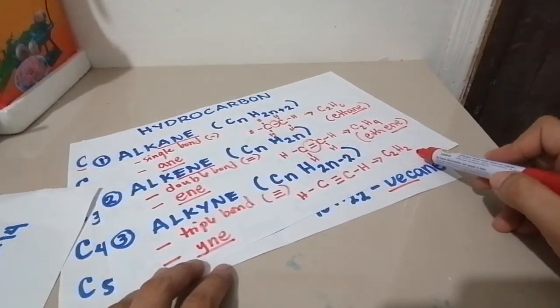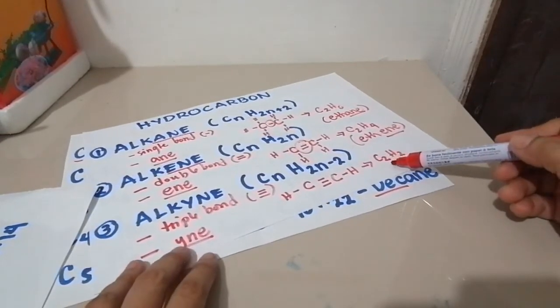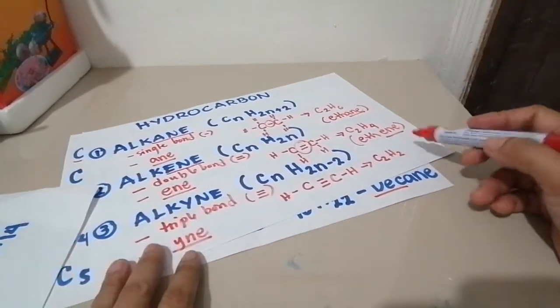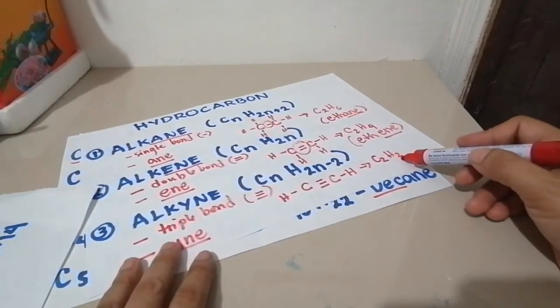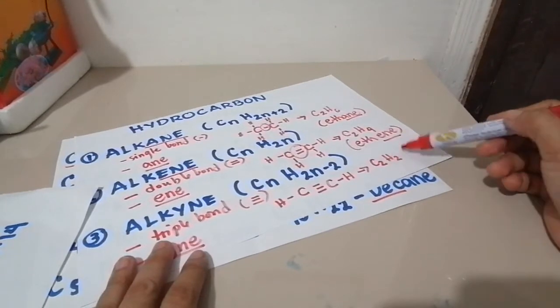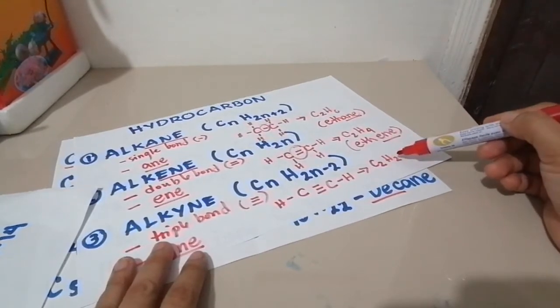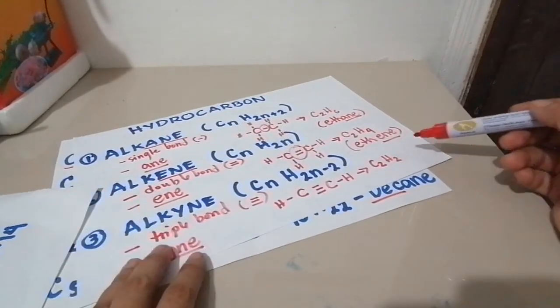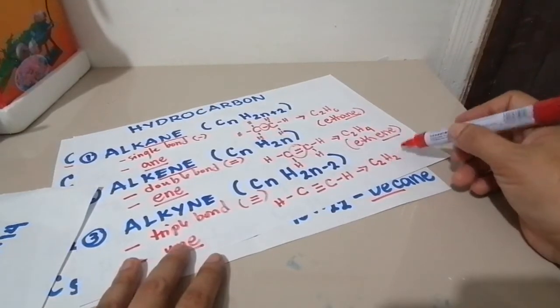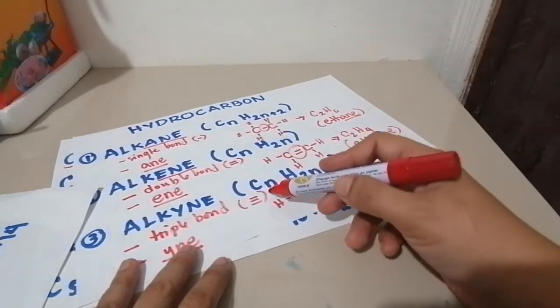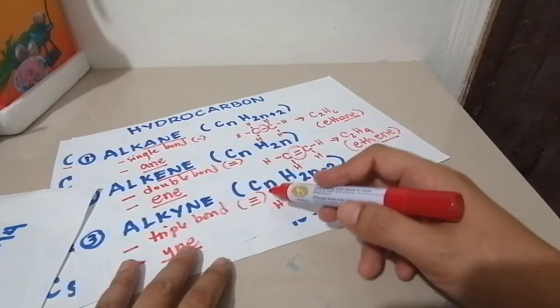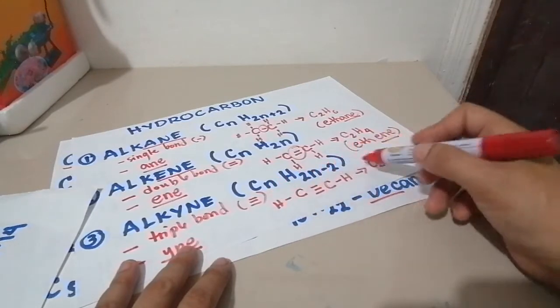To check it from the formula, there are 2 carbons. 2 times 2 is 4, minus 2 is 2. So it's correct. Since the carbon here is 2, and we minus 2 after we times, the number of hydrogen here decreased. The number of hydrogen here is only 2.